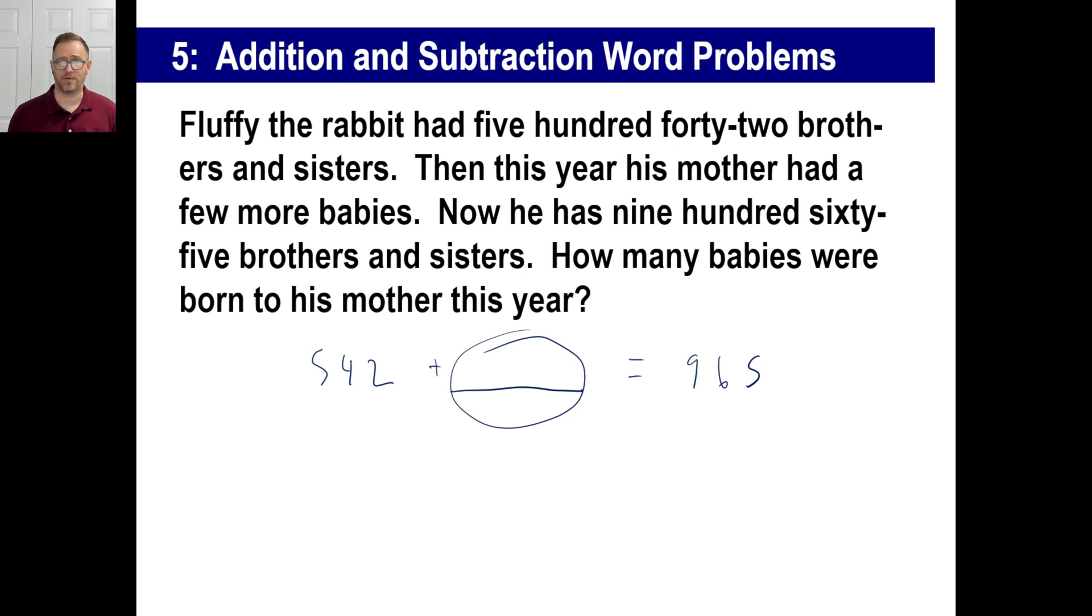It won't be addition, right? That doesn't make any sense. If you add them both, you get like 542 plus 1,400 equals, it doesn't work. So you're going to have to subtract those two. So you're going to get 423. Very busy year for mom. Let's try the practice problems on page 21. Go ahead and pause it and come back when you've got A.